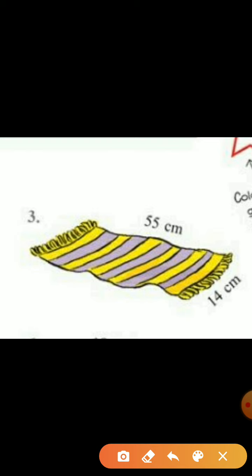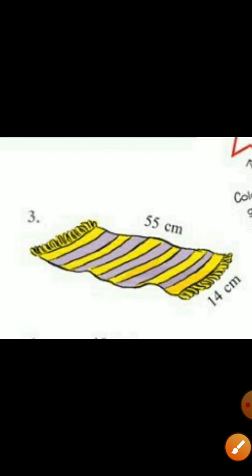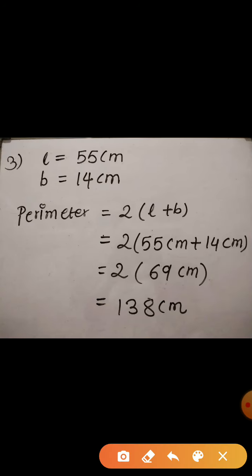Now look at the third picture. This is a mat having length 55 cm and breadth 14 cm. Again, to find out the perimeter of this mat we use the formula 2 times length plus breadth. Now here we substitute the value. Length is 55 cm and breadth is 14 cm.